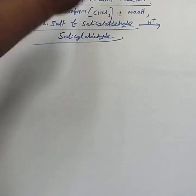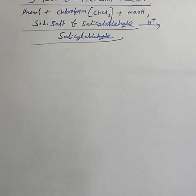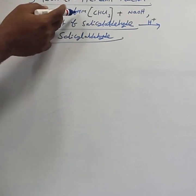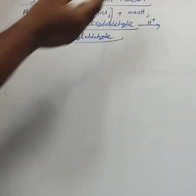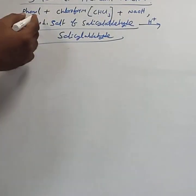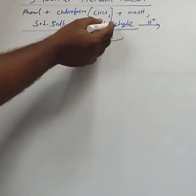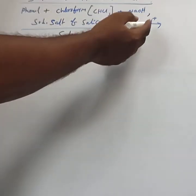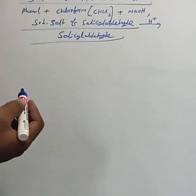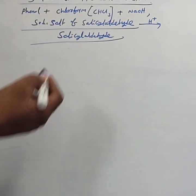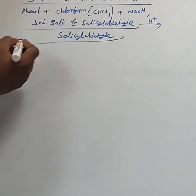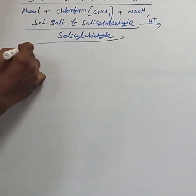This reaction is called the Reimer-Tiemann reaction. This carries one mark. Phenol treated with chloroform in the presence of sodium hydroxide gives the sodium salt of salicylaldehyde, which on acidification forms salicylaldehyde. You can also write the self-explanatory reaction.